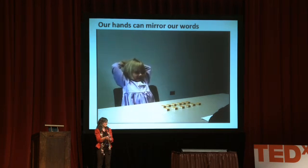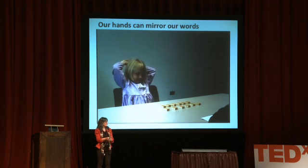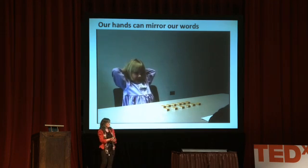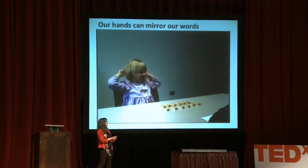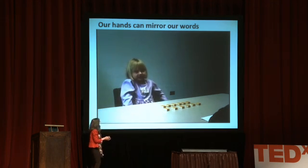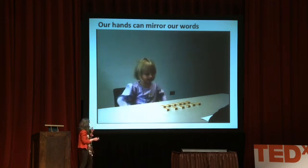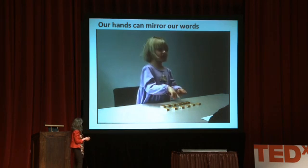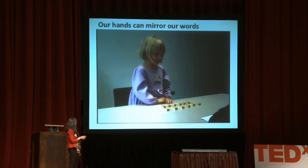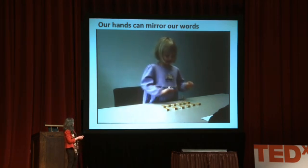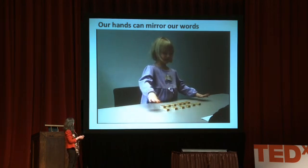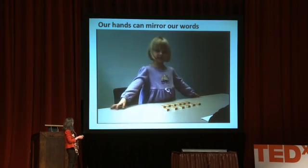Do these two rows of checkers have the same or a different number of checkers in them? This one. Which row has more checkers in it? This one. Why does it have more checkers in it? Because you spread them apart.